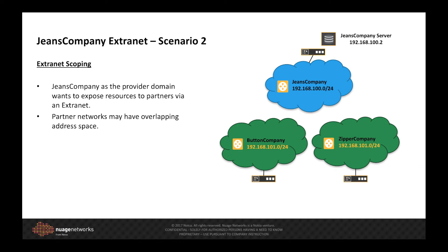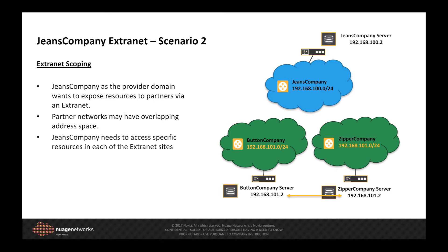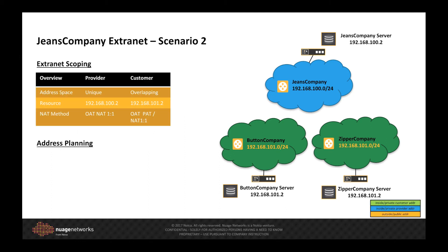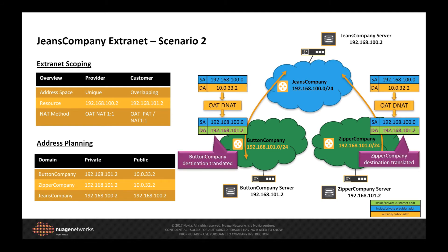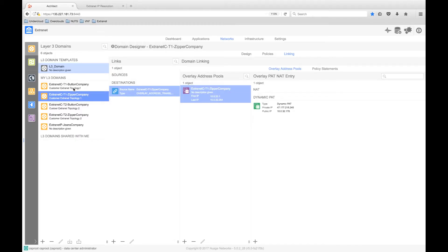However, what happens if the provider — in this case the Jeans company — needs to connect to a resource in each of the Extranet sites? Going back to our high-level topology, we now have a server in both the button and zipper company domains that we need to access. So the Jeans company domain needs a way to deal with the overlapping address space running in each of the Extranet customer domains. To solve this, we are going to add a one-to-one NAT rule into our overlay address translations. We will create a static translation between the internal or private IP of the server — only accessible inside its own domain — and an address from our address pool that is routable in the provider domain, i.e., 10.0.32 and 10.0.33. So let's create a static one-to-one NAT rule for the button and zipper company domains.